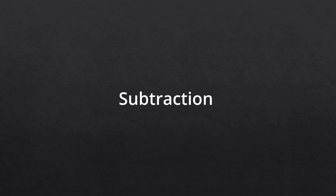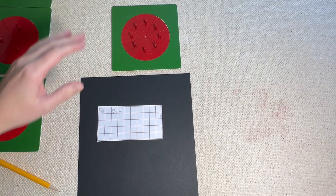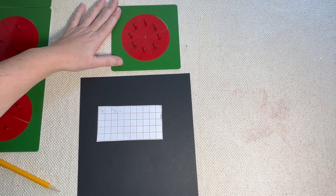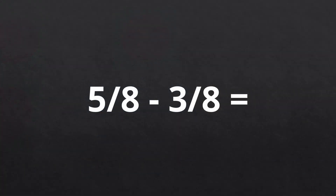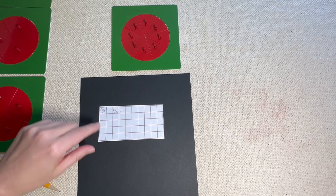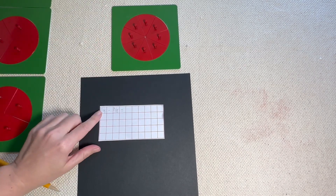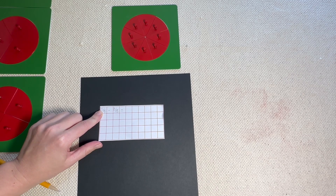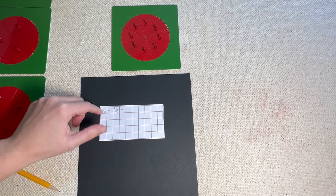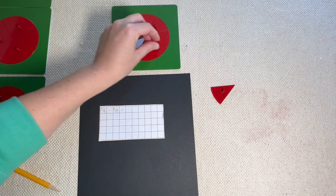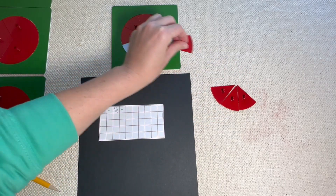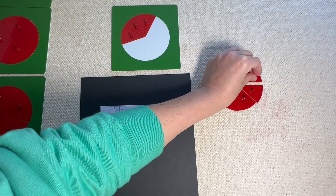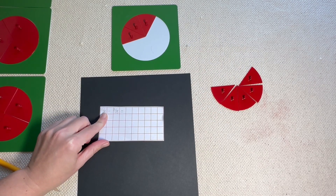Now let's move on to subtraction. In subtraction, it's going to work just a little bit differently. Let's work with the family of the 8s again. This time, let's look at our equation — it's going to say 5/8 minus 3/8 equals. So in order to start subtraction, we have to find our first number. We found the family of the 8s, and let's look at that top number — that's going to tell us how many we're going to work with, and that's the number 5. So let's count out 5: 1, 2, 3, 4, 5. So we have our first number here: 5/8.